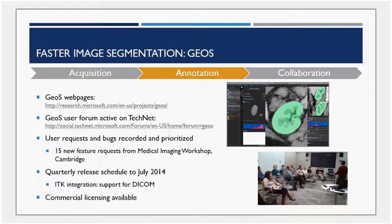Moving on to annotation: it's all very well to have a large amount of medical data, but when it comes directly from patients and has been anonymized, you need to label that data so you know what it's showing. Currently, automated image recognition on computers is not sufficiently good to automatically recognize that it's looking at a CT scan of a kidney, for example. What's required for the annotation step is you need to get expensive, highly trained radiologists, put them in a room, show them your data, and ask them what it shows. This is a slow, extremely manual process, and you're taking radiologists away from real clinical work.